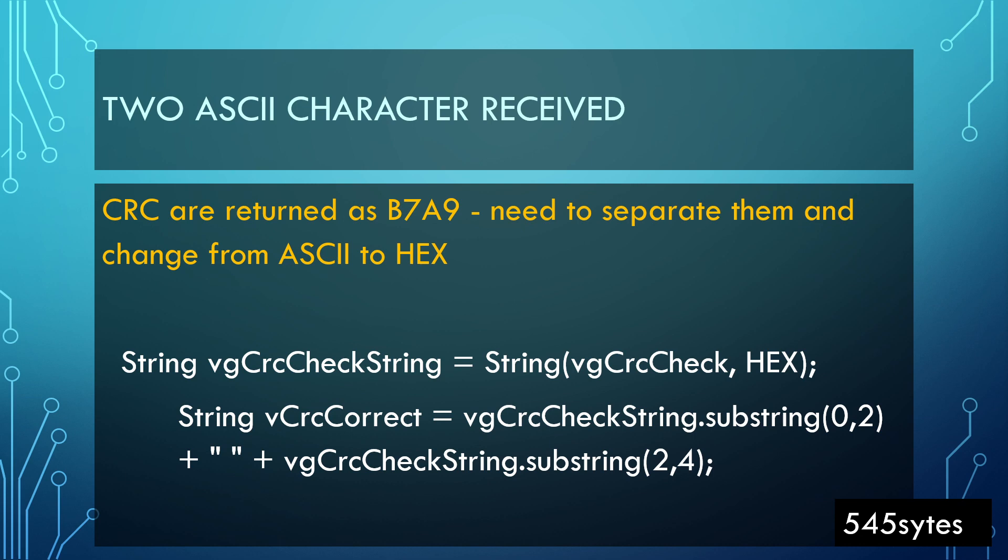After that, the CRC is generated and returned as B7A9. We already know this is the CRC code for QPIGS, but this B7A9 is not accepted as a hexadecimal. B7A9 right now is ASCII. This is English, you know, B7A9 is ASCII code, so we need to convert this into hexadecimal.